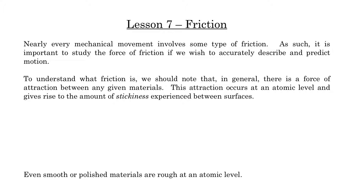To understand what friction is, we should note that there's a force of attraction between any two materials. This attraction is on a microscopic level — really at an atomic level. And when two materials pass over each other, they form electrostatic bonds. The positive parts of some atoms and the negative parts of other atoms create an attraction at the atomic level, and this is what results in the stickiness between surfaces.